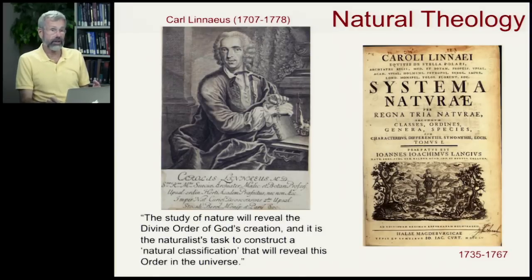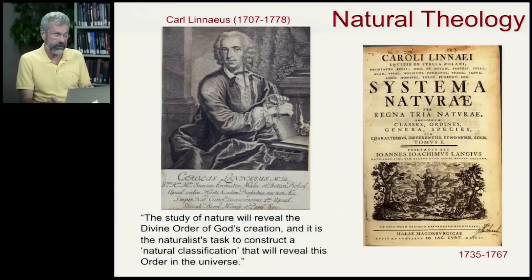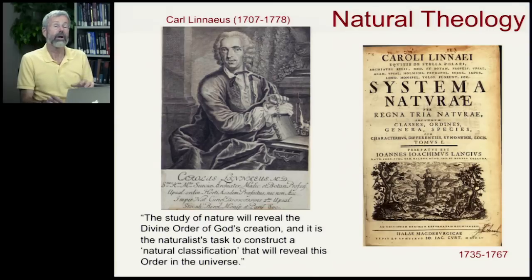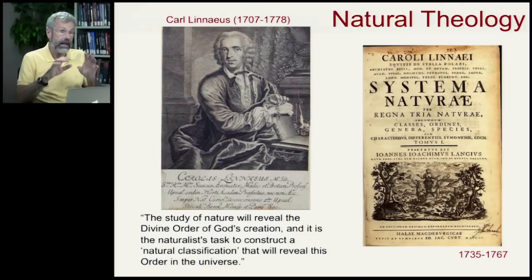His motivation for classifying all the different organisms on Earth was, as he says, the study of nature will reveal the divine order of God's creation, and it's the naturalist's task to construct a natural classification that will reveal this order in the universe. His first system to try to understand the relationships between different species — at least to put them in different pigeonholes and have some sort of ordering — was his Systema Naturae from 1735.